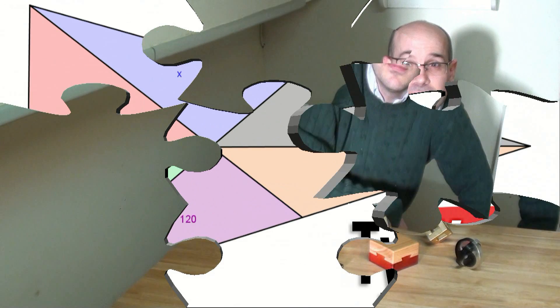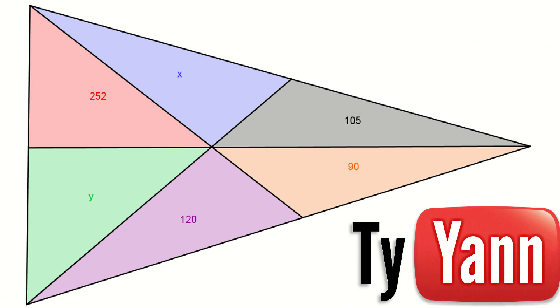Here's the problem. We have a big triangle, as you can see, that is cut in six smaller triangles. And on the right, the pinkish triangle has an area of 252. The blue one has an area unknown, which is X.